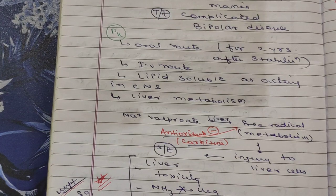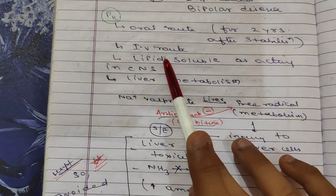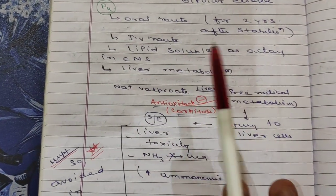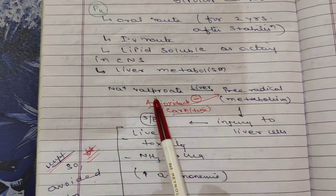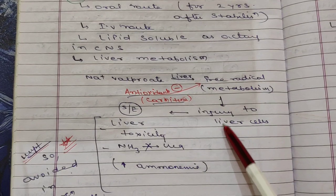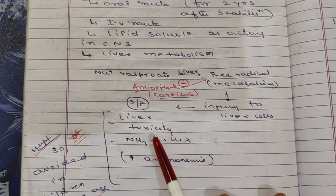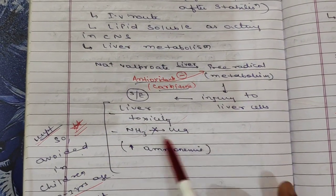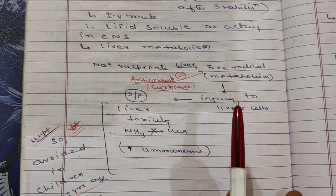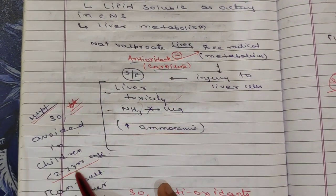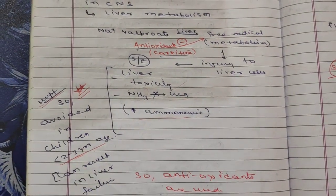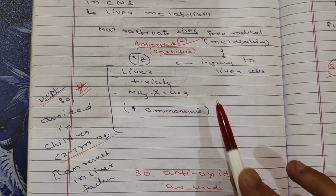Regarding pharmacokinetics: sodium valproate can be given orally or intravenously in emergencies. It is lipid-soluble so it acts in the CNS. It undergoes liver metabolism, forming free radicals that can cause liver cell injury and liver toxicity. Because of this, the drug is avoided in children below two to three years of age, as it can result in liver failure.